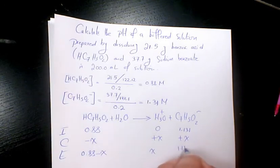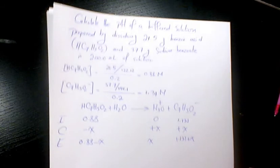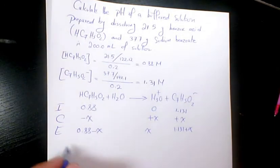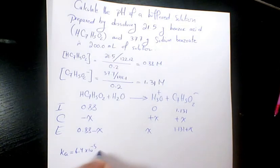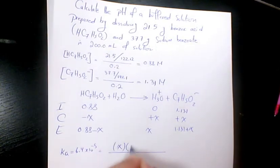Then I can say Ka, which is dissociation constant, and if you look in the table for benzoic acid it's 6.4 times 10 to the power of negative 5, equals x times 1.31 plus x divided by 0.88 minus x.